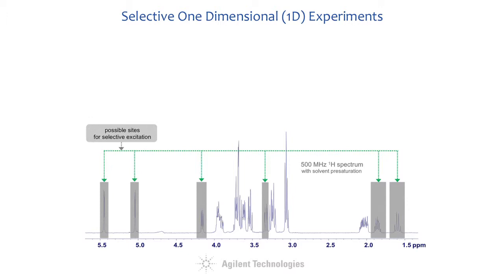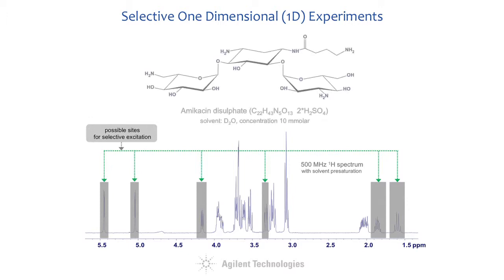Agilent's VNMRJ3 software is fully compliant with all these criteria. For demonstration purposes, we have chosen amikacin disulfate, a natural antibiotic dissolved in deuterium oxide at a concentration level of 10 millimolar.